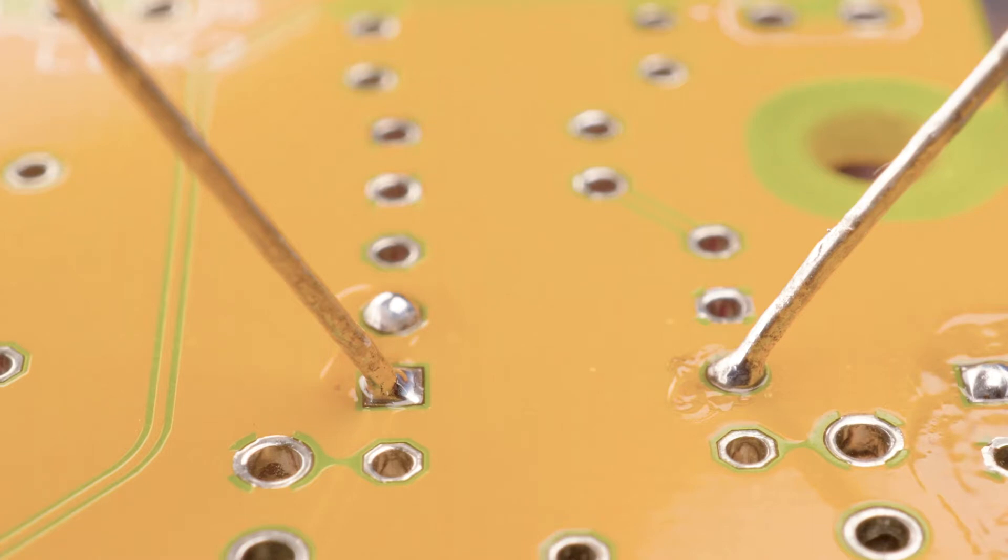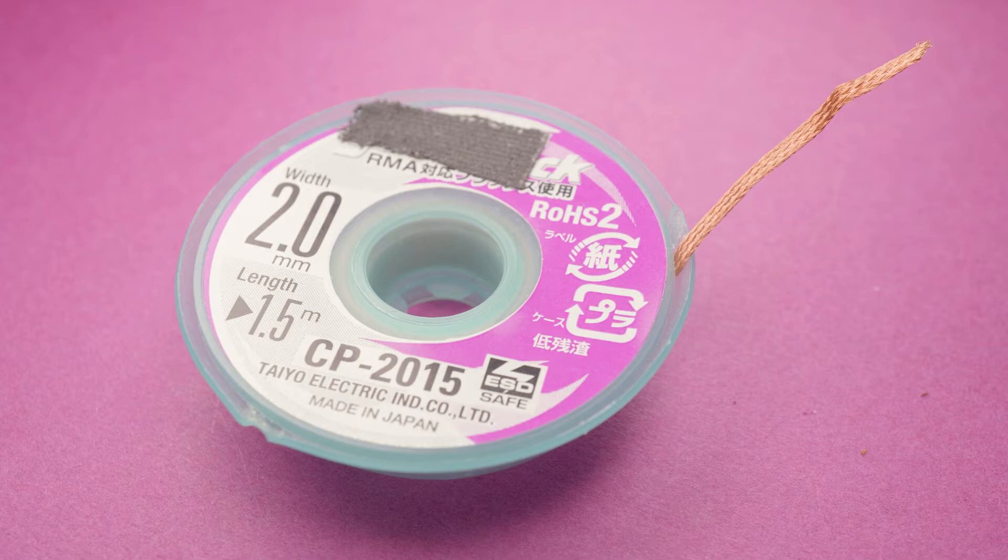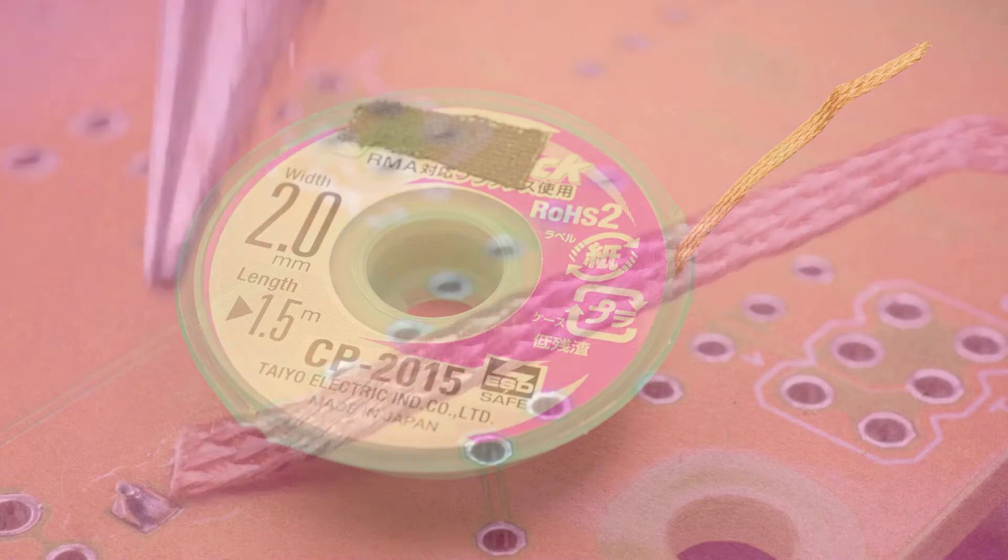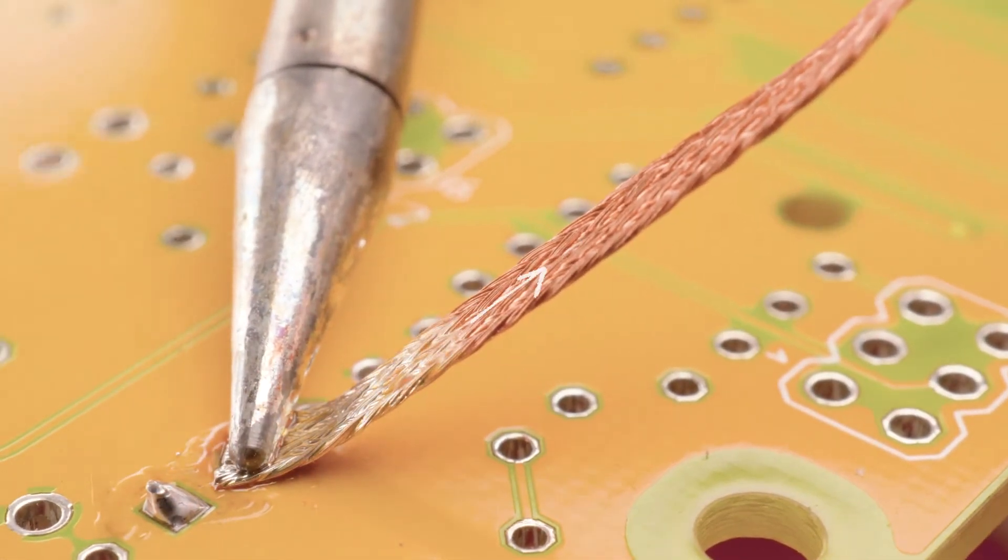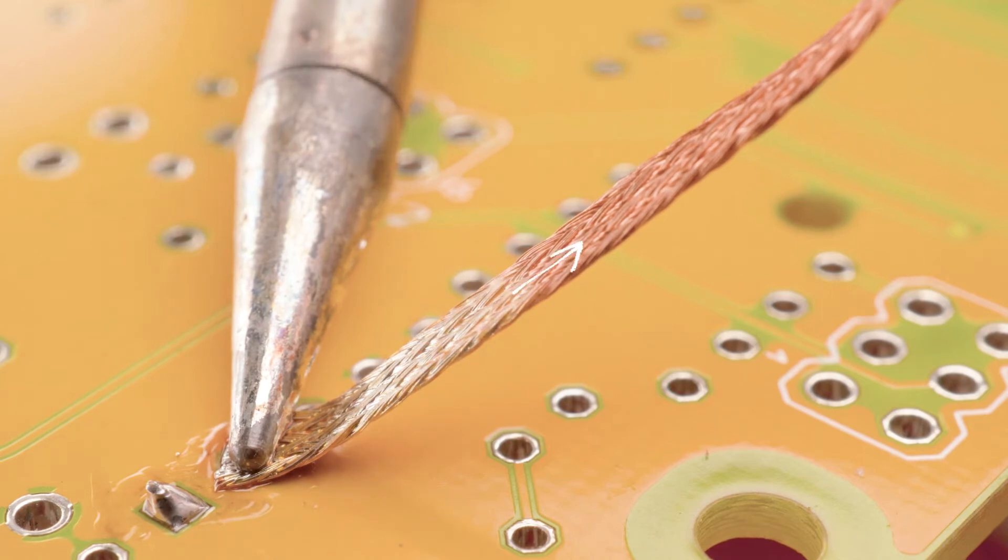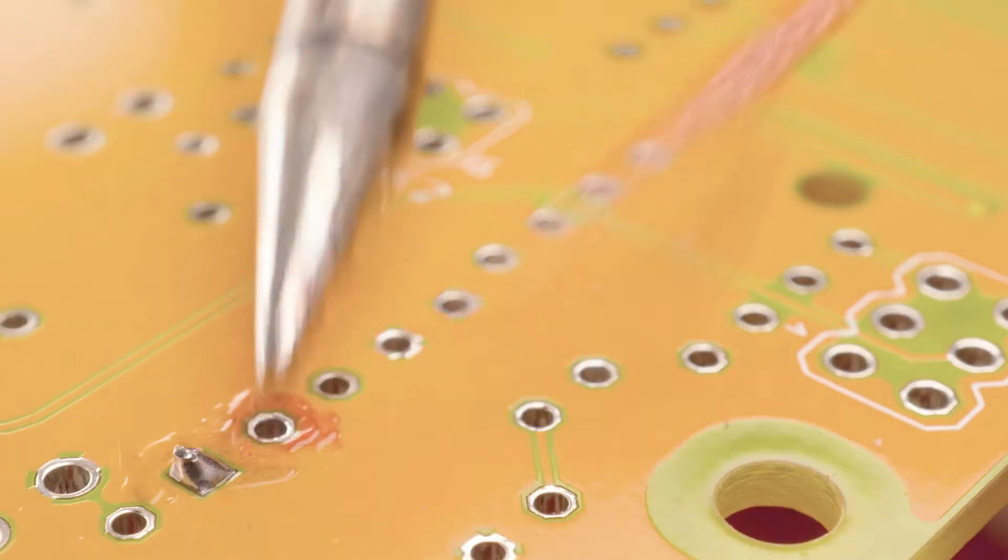Now, it looks like I accidentally filled one of the holes over there, and let's clean that up. Now, to clean up that hole, I will use something called a solder braid, and it's a necessary tool for through-hole soldering, in my opinion. And what you do is you just heat it up with the tip of your soldering iron, and the solder will flow up the solder braid, and it just sucks all of that solder out.